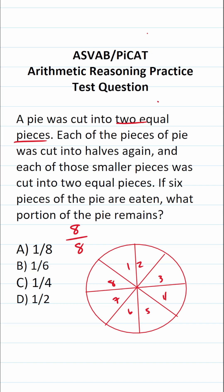We know six of them are eaten. So this goes down to two over eight pieces of pie remaining. And we can reduce this by a common factor of two, two divided by two is one, eight divided by two is four.